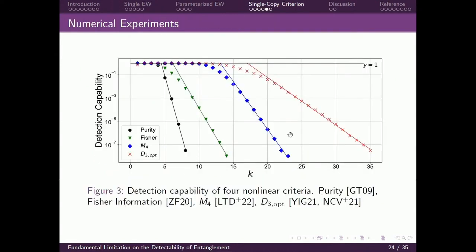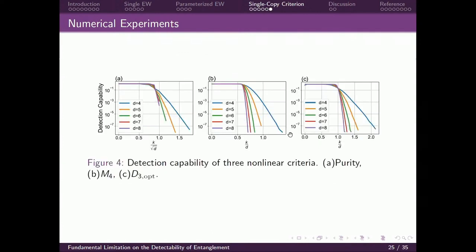We numerically examined several entanglement criteria, including purity, Fisher information, and two moment-based methods. We show that they all have exponential decay behavior after K exceeds some threshold. For the threshold, our numerical experiments found that for three of the criteria, the threshold scales polynomially with D. So these criteria are rather effective, but can never be efficiently realized through single-copy measurements.